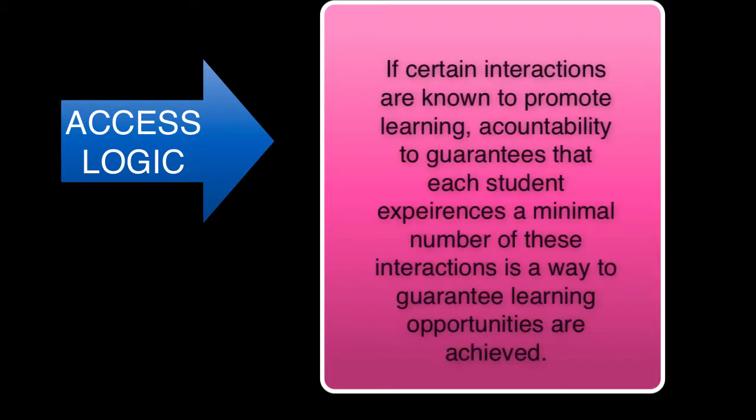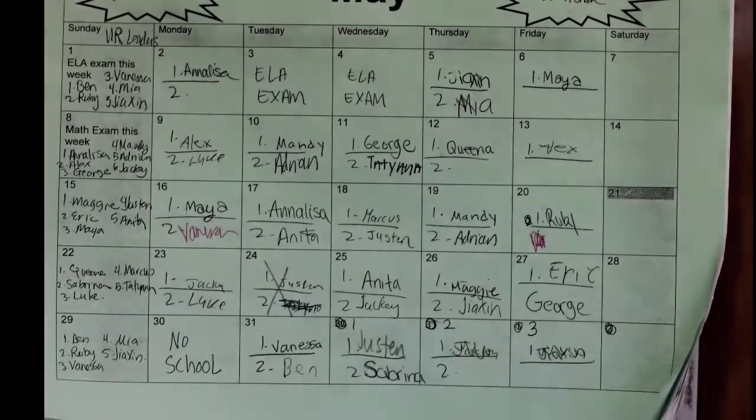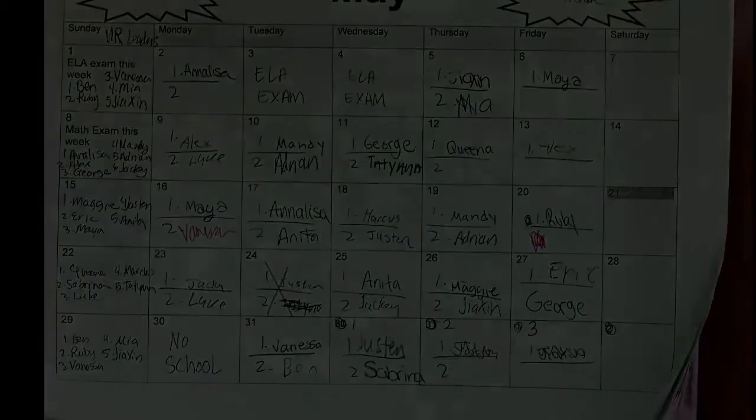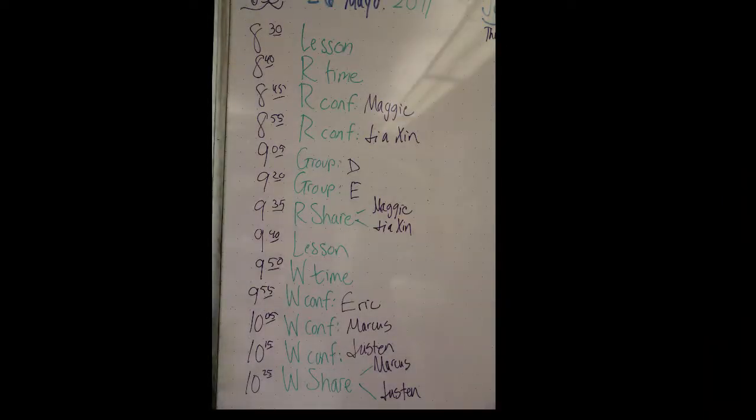If we know that certain types of social interactions promote learning, then accountability for us to ensure that every child has consistent access to these interactions is a means by which opportunity to learn can be guaranteed to each child. You should post a conference schedule in your classroom so that every student knows when they will be having a conference and so that they can prepare for the conference.